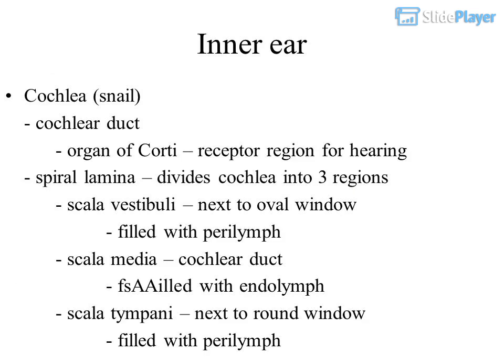The cochlea is snail-shaped and contains the cochlear duct. Within it is the organ of Corti, the receptor region for hearing. The spiral lamina divides the cochlea into three regions: the scala vestibuli, which is next to the oval window and filled with perilymph; and the scala media, which is the cochlear duct, filled with endolymph.